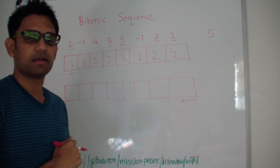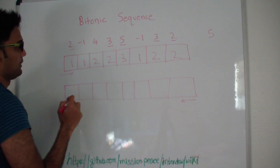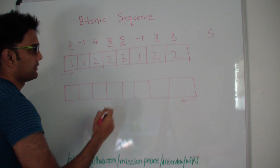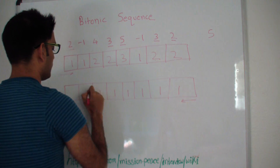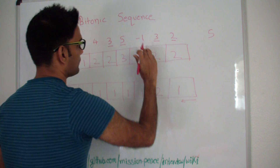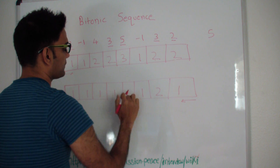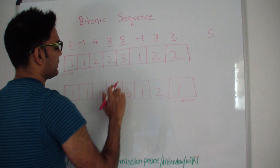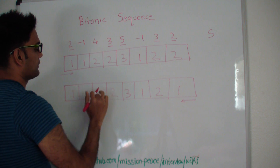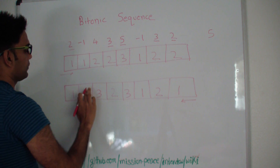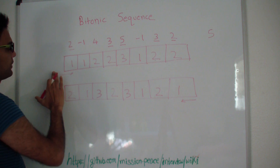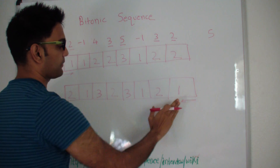I have discussed this problem in my other video on longest increasing subsequence. Now let me find the longest increasing subsequence from the right side. 2 is 1. Since 2 is less than 3, the longest increasing subsequence here will be at least size 2. Minus 1 does not change it. 5 will be 3. 3 will be 2. 4 is 3. Minus 1 is 1 and 2 is 2. So here we have the longest increasing subsequence going from left to right and the longest increasing subsequence going from right to left.